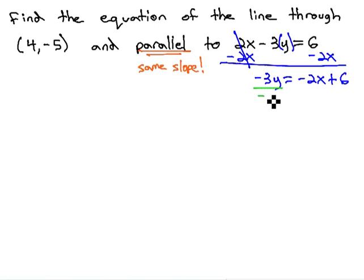Finally, we can get the y alone by dividing each term by negative 3. This gives us y equals positive 2 thirds x minus 2. This is now in slope-intercept form, y equals mx plus b.